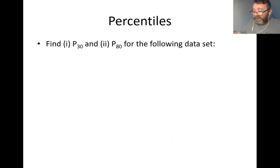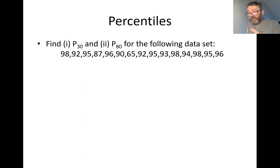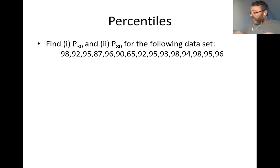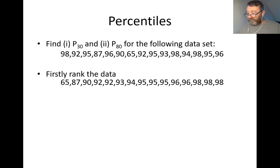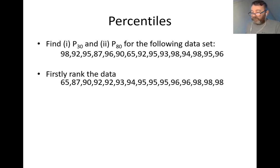Example: find P30 and P80 for the following data set. The first thing we must do is check whether the data is ranked in order. Looking at the raw data — 98, 92, 95, 88 — it is not ranked. So we take these numbers and put them into incremental order, starting with the smallest and going to the biggest, giving ranked data from 65 to 98.